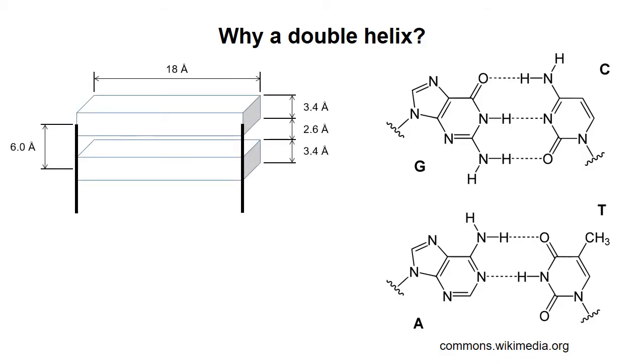In this diagram, the base pairs are represented by these rectangles and the sugar phosphate backbones by the solid lines. If the DNA existed as two straight parallel strands with the backbones straight between the bases, the length from one phosphate to the next is about six angstroms. But each base is 3.4 angstroms thick.